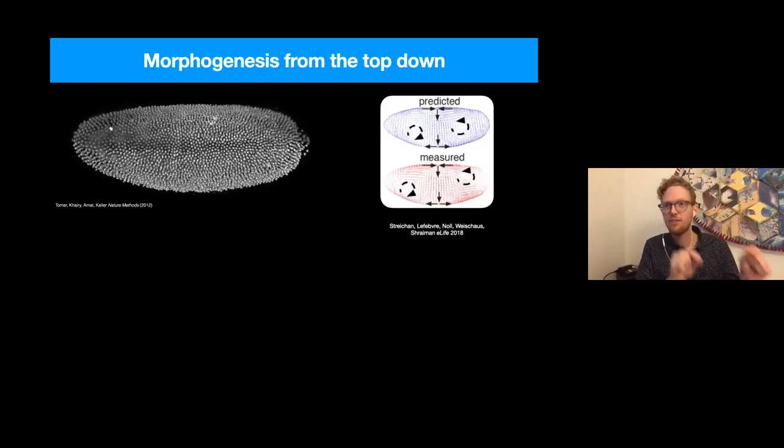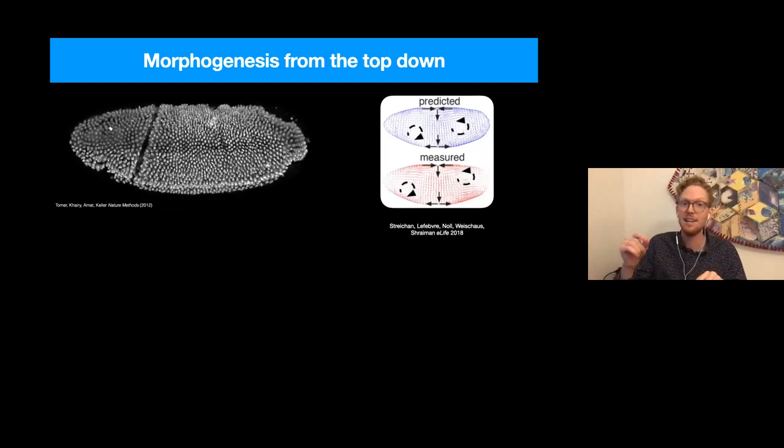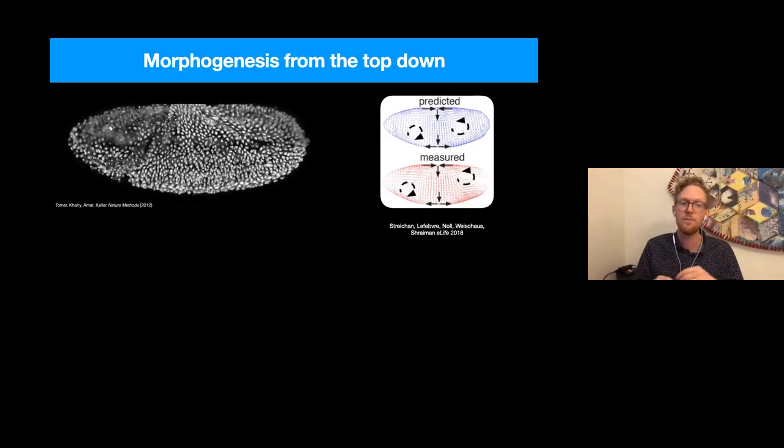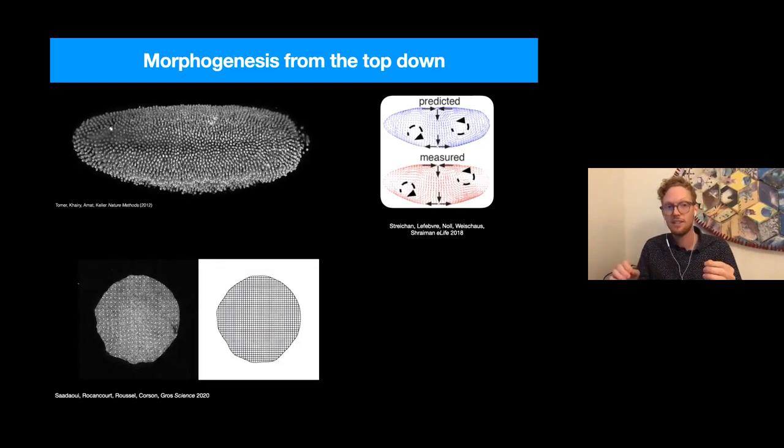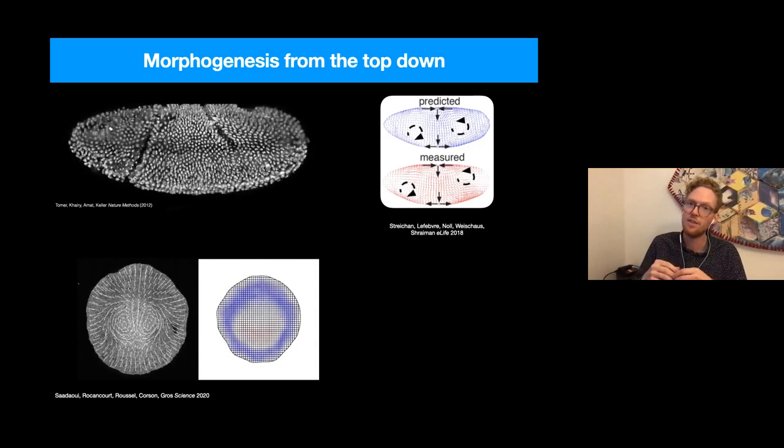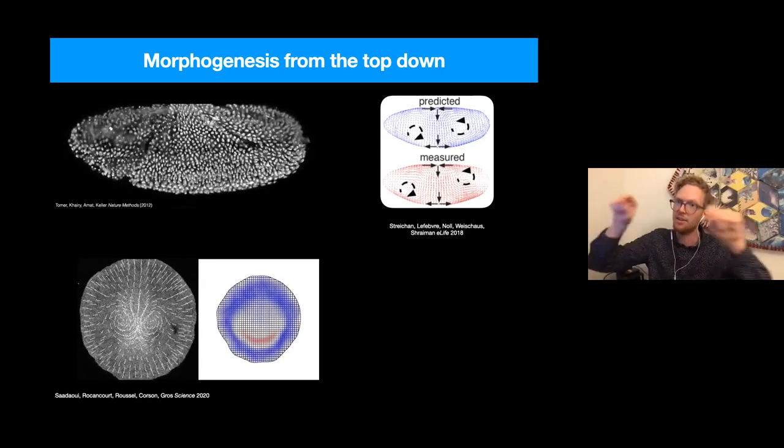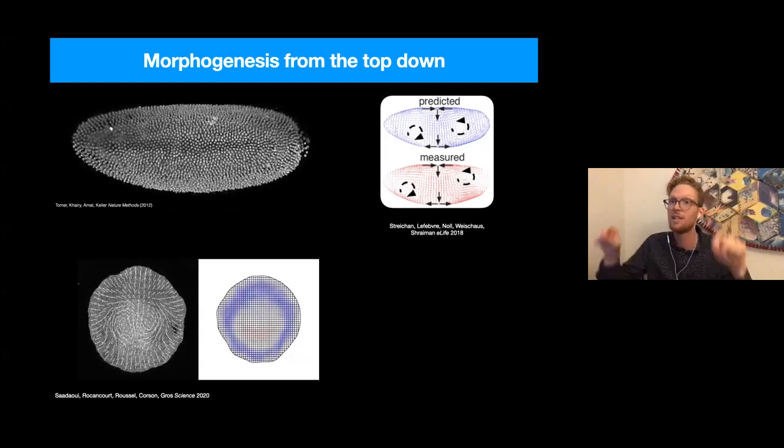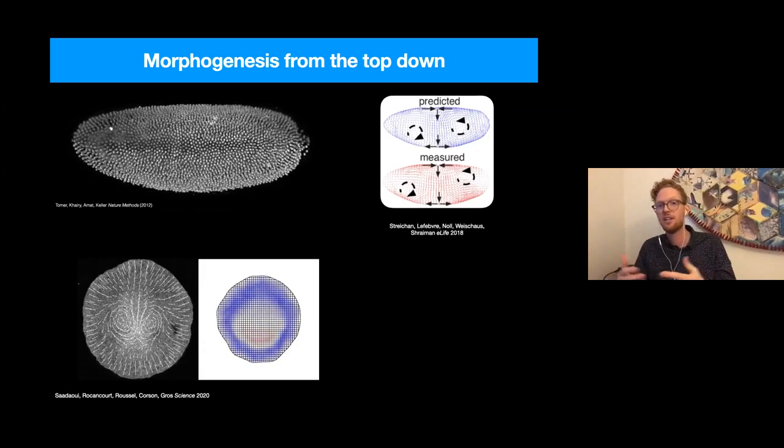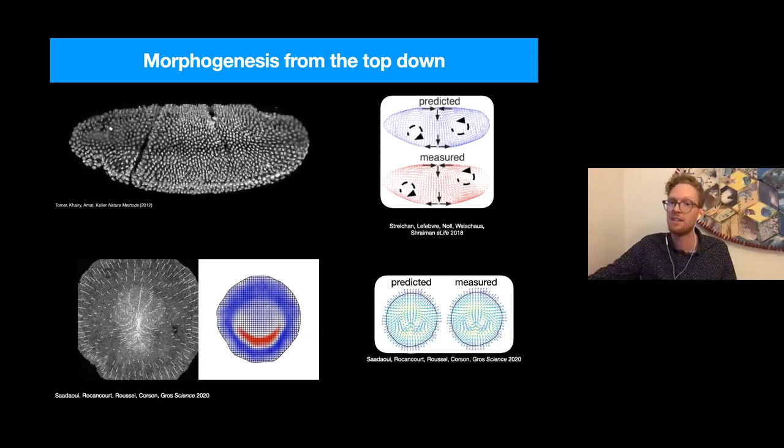Astoundingly, just the information encoded in the distribution of these molecular motors has been shown very recently to be sufficient to quantitatively predict the flow of the tissue during this stage. And this is done in the fly. A very similar study just published earlier this year found that the same principles apply in the bird embryo, which looks a bit like a pancake as it spreads out and also has this swirling fluid-like motion. So here, these flows also are captured in a prediction that describes the tissue as a fluid with patterned active forces arising from molecular motors.